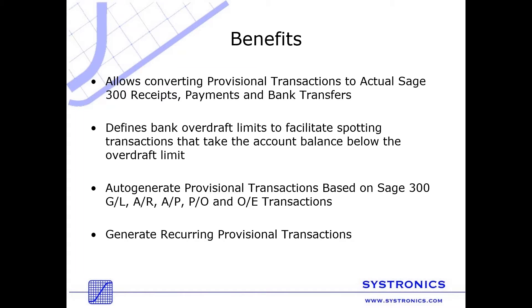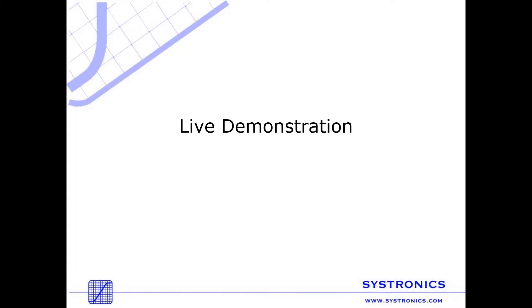The transactions that put the bank balance below the overdraft limits are highlighted. Cash Flow Forecasting also allows you to generate provisional transactions automatically from Accounts Receivable invoices, Accounts Payable invoices, Order Entries, Purchase Orders, or GL account budgets. It also allows you to generate recurring bank provisional transactions for transactions that are repeating over time. Now let's go live and see how the program actually works.